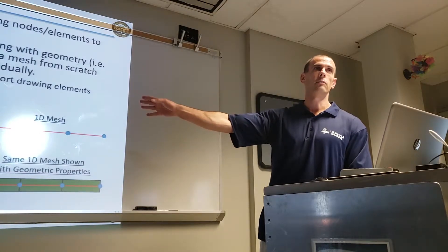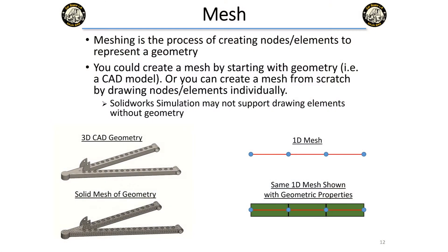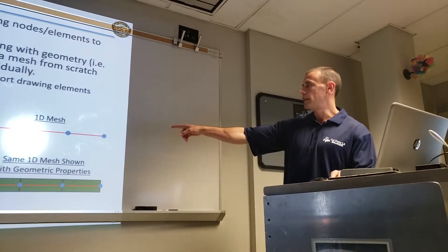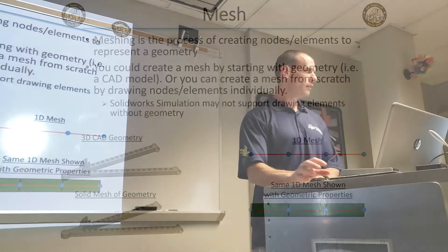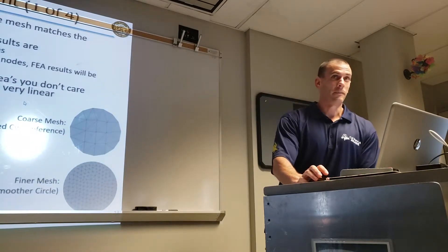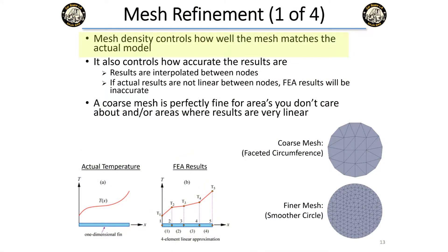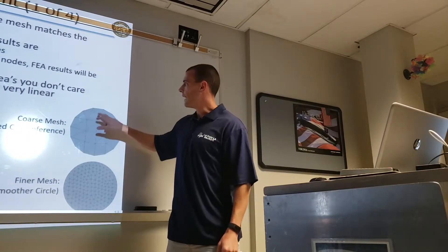For most of the time you're going to start with geometry and turn that into a mesh. This is what the CAD will look like, and when we say mesh, you're going to see just the elements. Your mesh density will control how well the mesh matches the actual model. Think of it like this: if you're trying to represent a circle, you're breaking it into small pieces. If you have a big mesh you're going to have a faceted circle because you have straight lines everywhere.